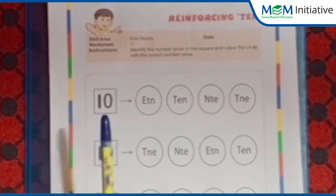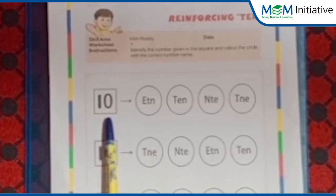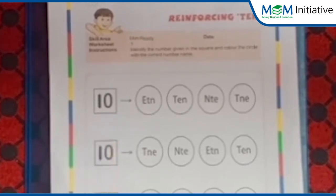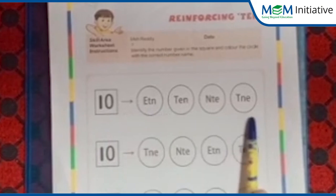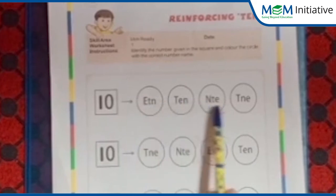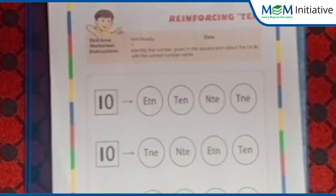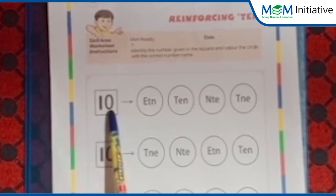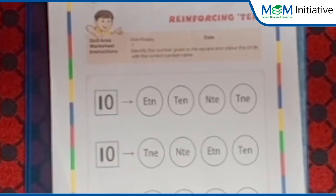Now children, over here can you see a square? Which number is written inside the square? It is number 10. After this, can you see these four circles? Inside these four circles, few spellings of number name 10 are given to you. What we have to do is identify the correct spelling of number name 10 and color it with crayons or color pencils.